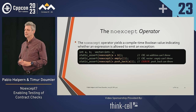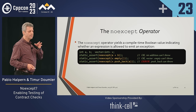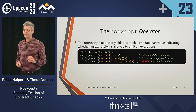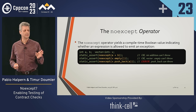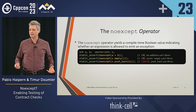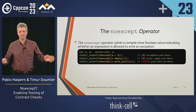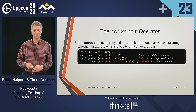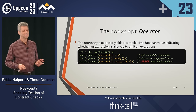The noexcept decorator is of limited utility without the noexcept operator. The noexcept operator says: is this thing noexcept? Its argument is an expression — not a function name, so be careful. If you pass a function name in, it'll evaluate as a function pointer, which is always true, because converting a function to a pointer is a non-throwing expression.